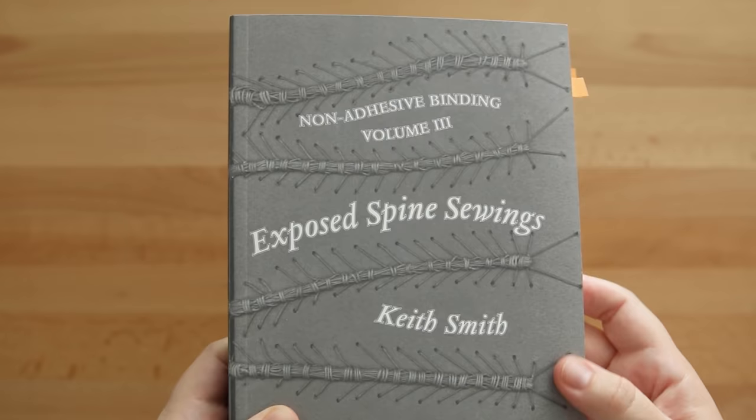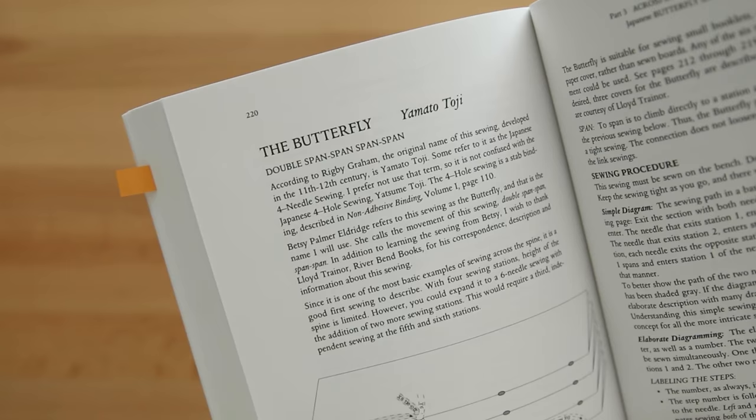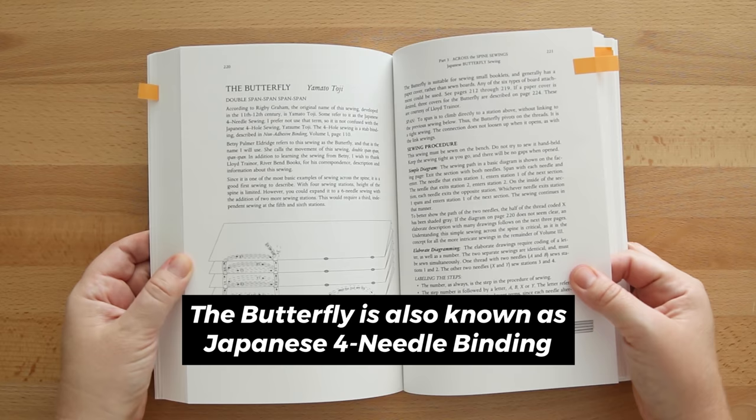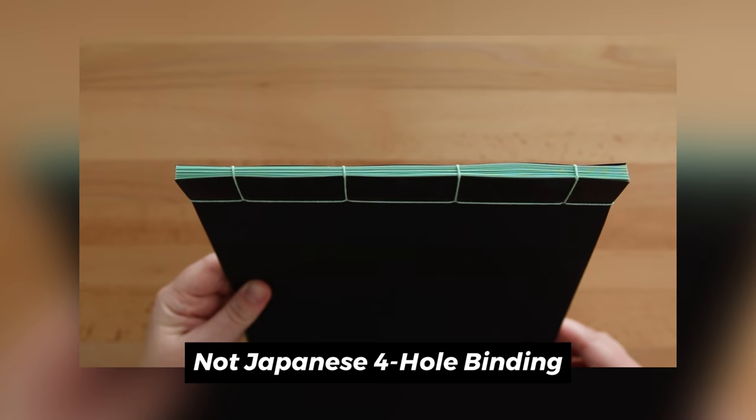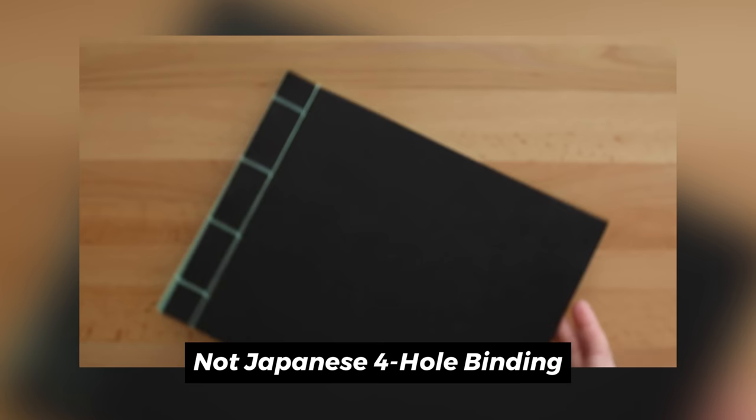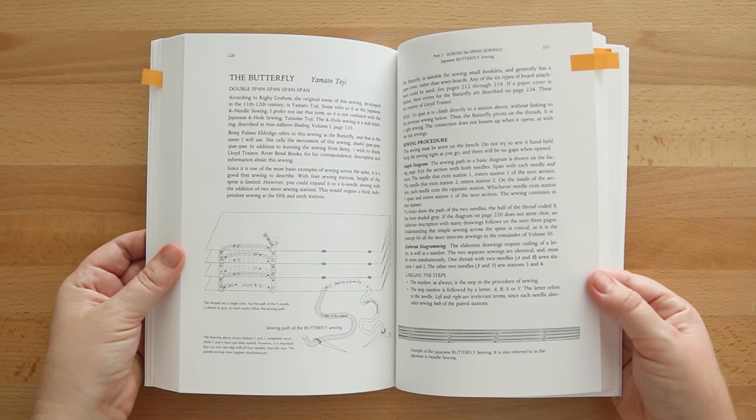I first learned how to do this method from this book by Keith Smith. I'll link it down below if you want to check it out. According to this, the butterfly method was originally called the Japanese four-needle sewing, but it was later called the butterfly so it wouldn't get confused with the Japanese four-hole binding, which is a totally different binding, which I also have a tutorial for.